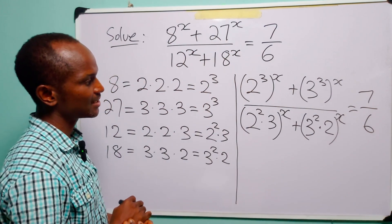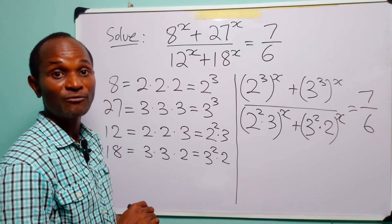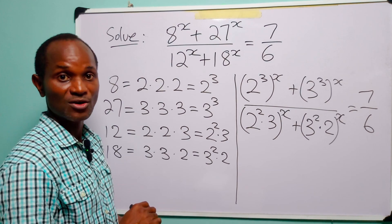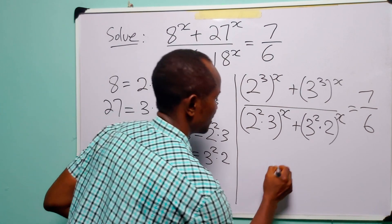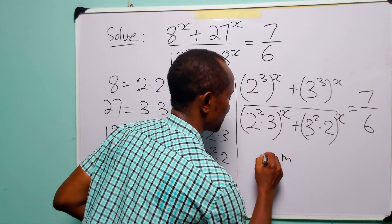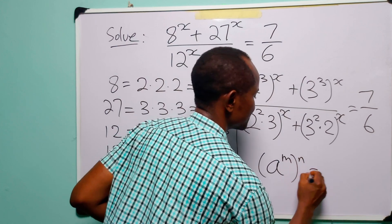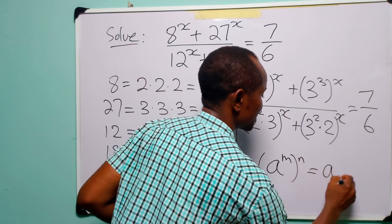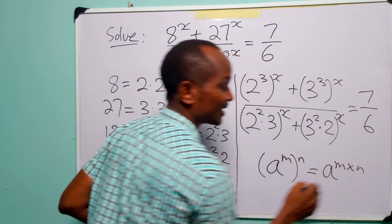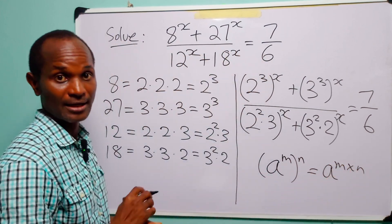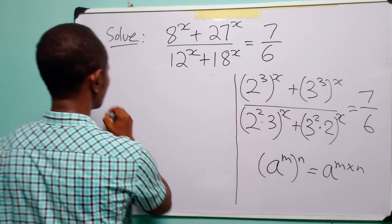Now the next thing we are going to do is to recall from our studies of indices that when we have a to the power of m to the power of n, this is simply equal to a to the power of m multiplied by n. So opening up the brackets,